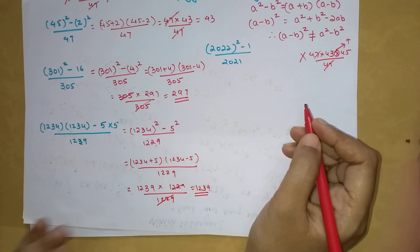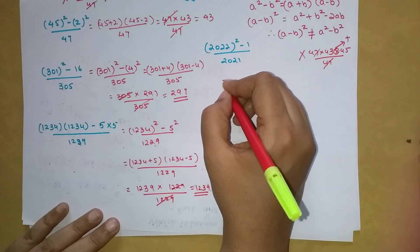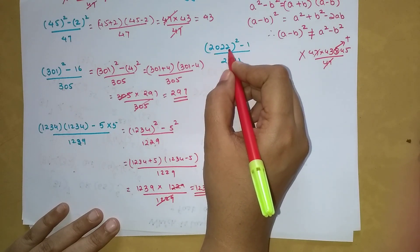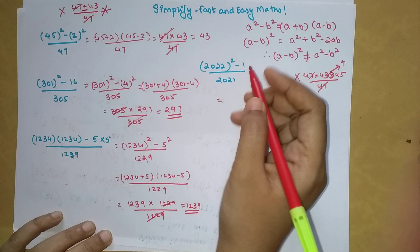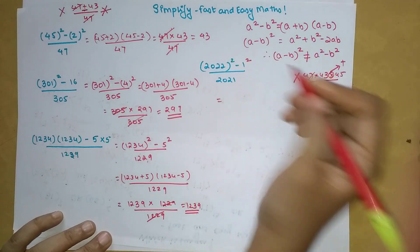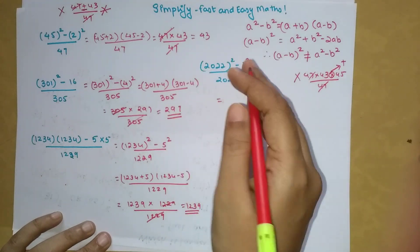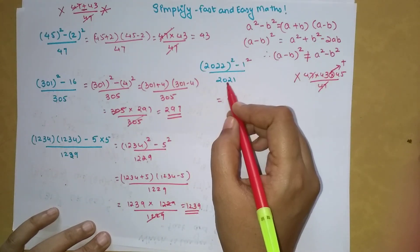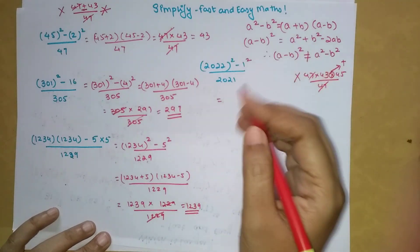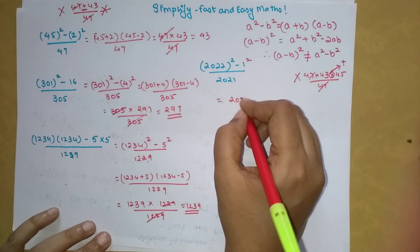So now, like I said, we will be able to do questions in your head. Now over here, we have 2022 the whole square, but there is just minus 1. But as you all know, 1 can be written as 1 square, because 1 square is nothing but 1. So now we are going to directly apply this orally. So 2022 minus 1 will be 2021, so that will get cancelled. We are just left with 2022 plus 1. So the answer is 2023.